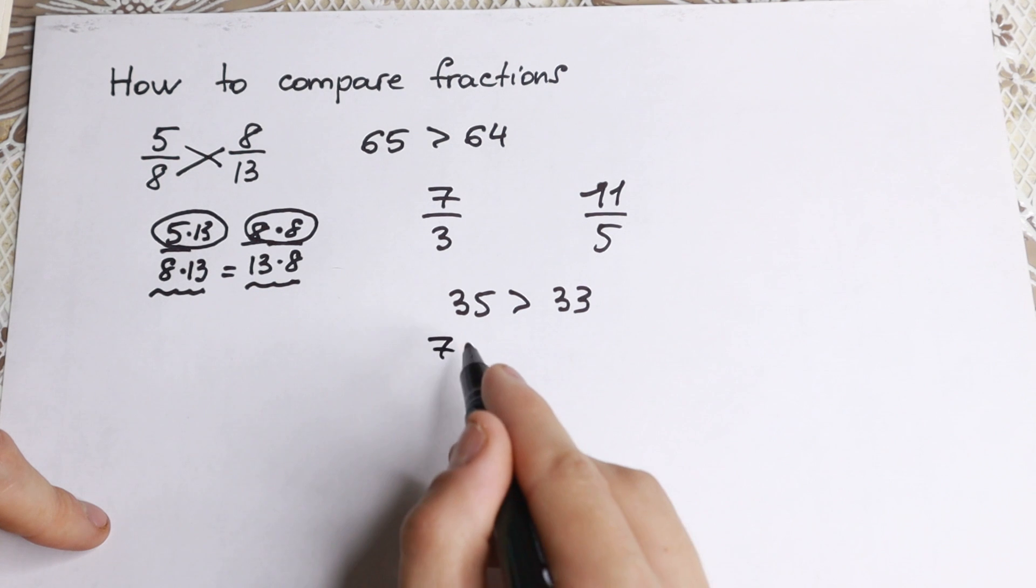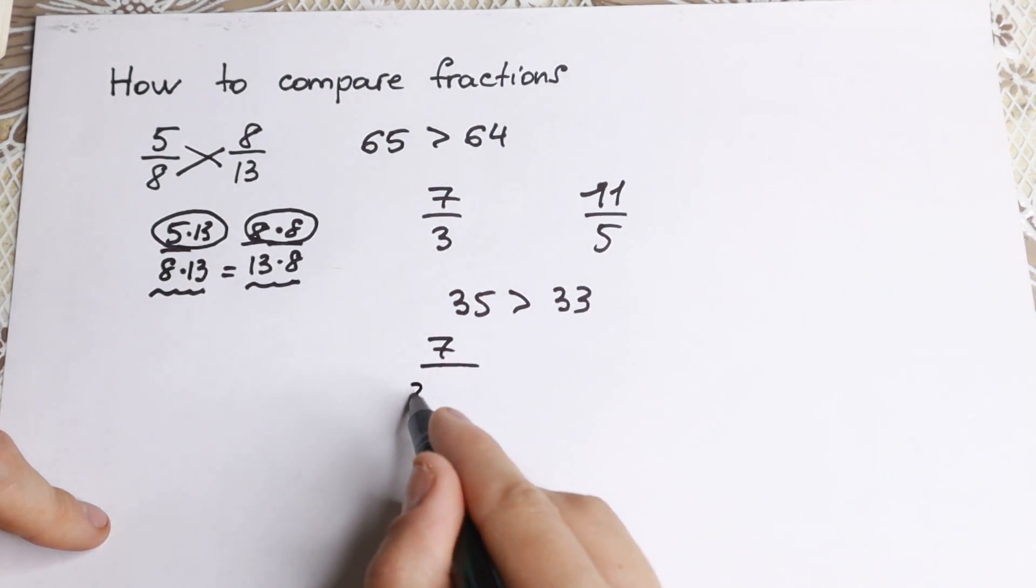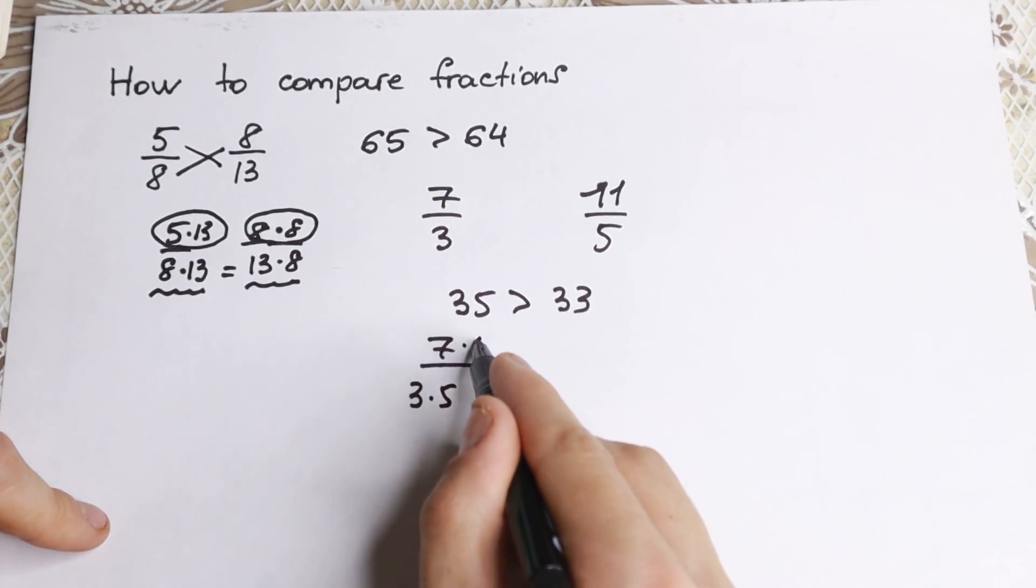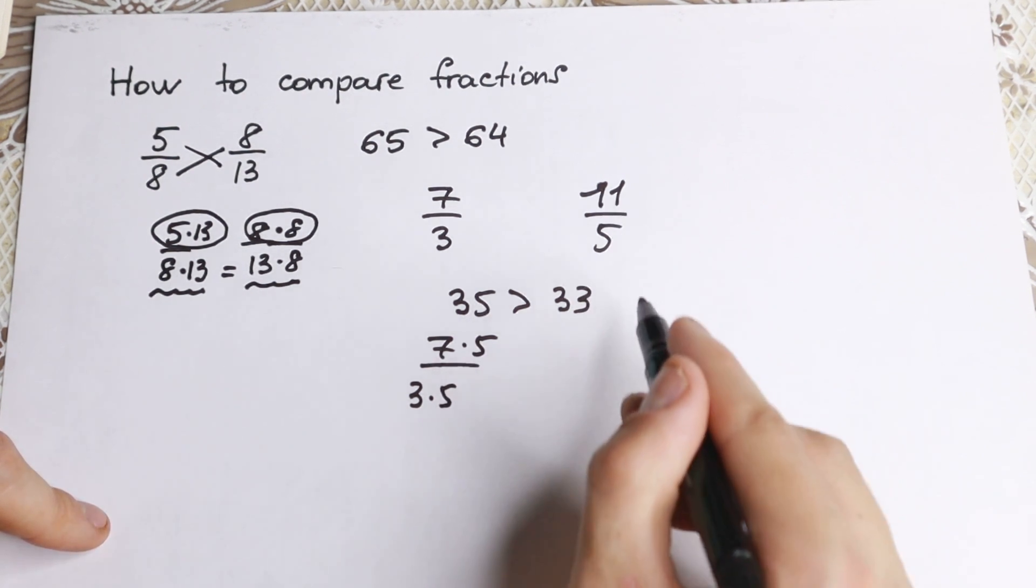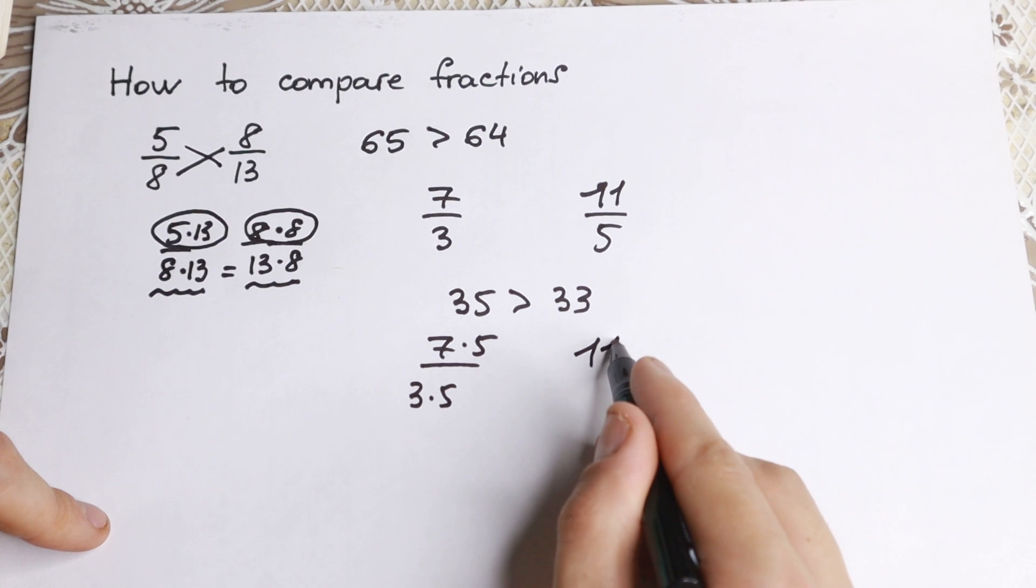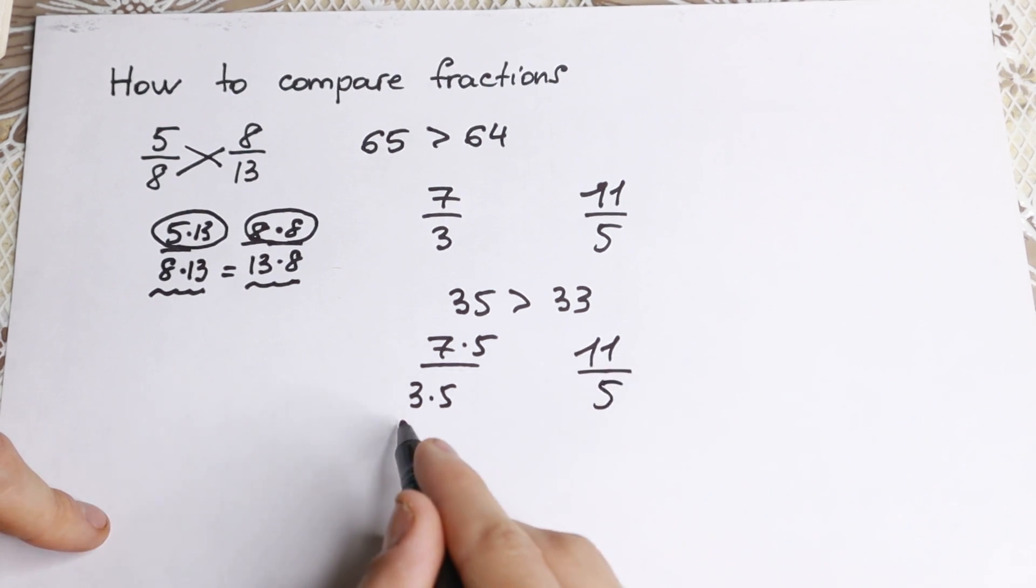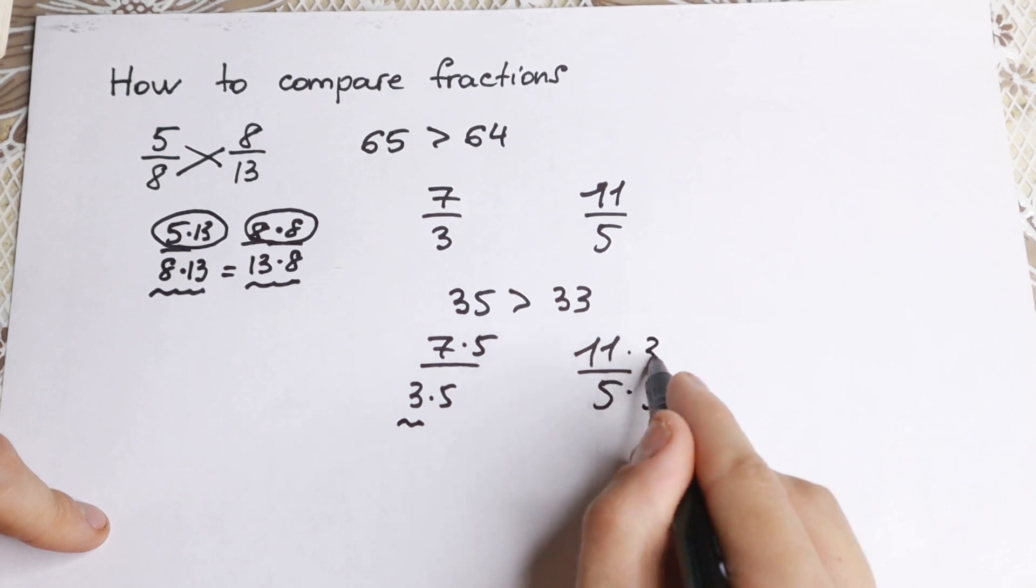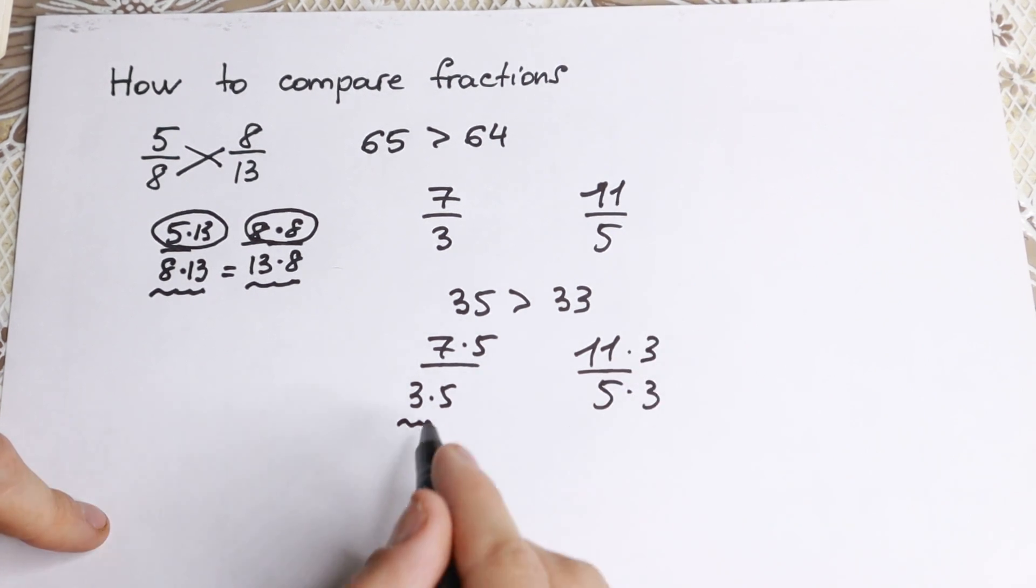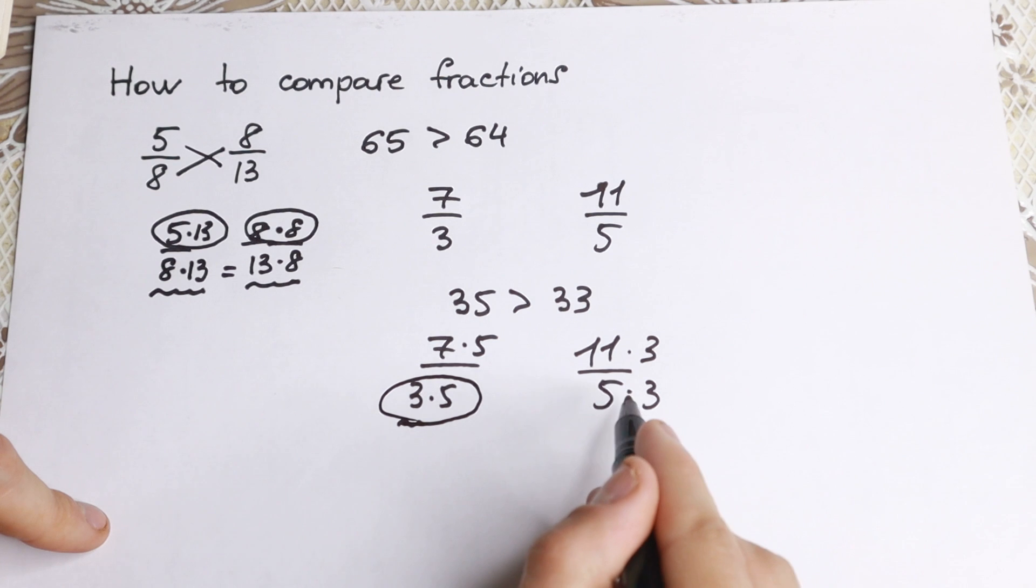Why is this correct? Because we have this denominator 5, so we multiply by 5 on both sides. We can easily cancel it, but we don't need to do this. And on the right-hand side, we have 11 over 5 and we multiply by this common denominator 3. So times 3 and times 3. We can easily cancel, but we don't need it. We need our common denominator the same.